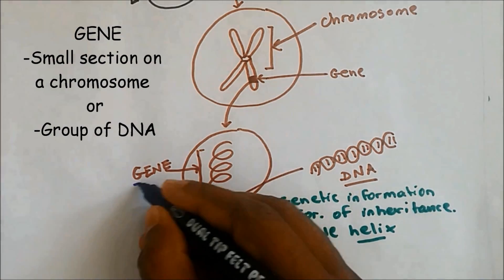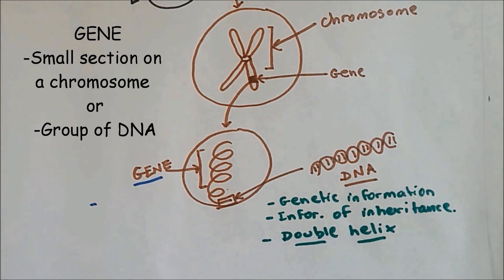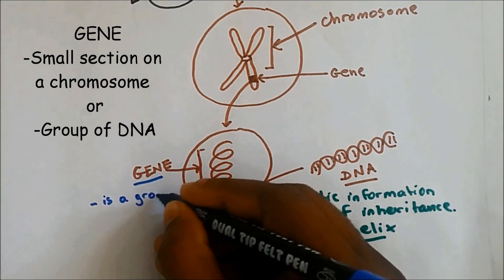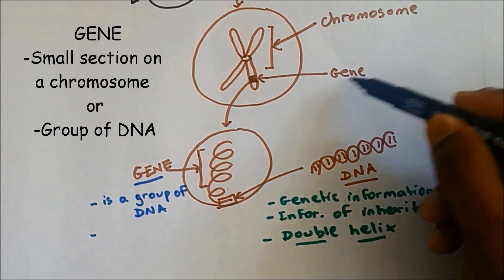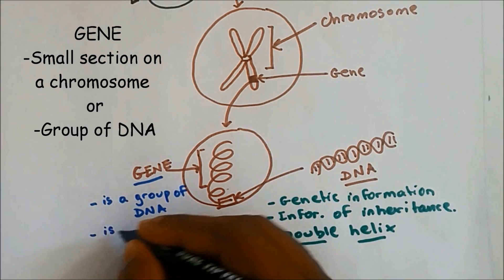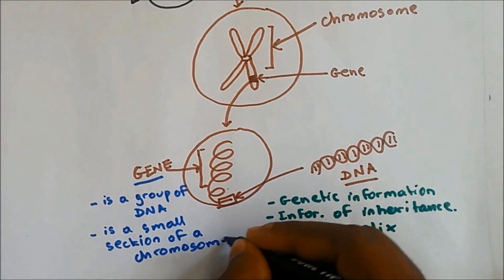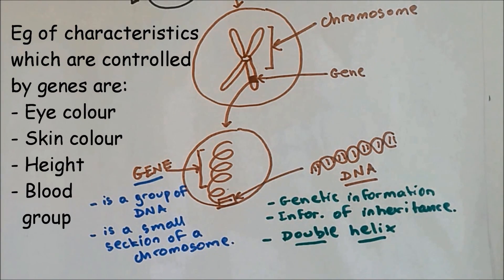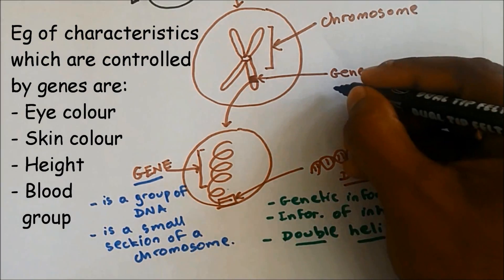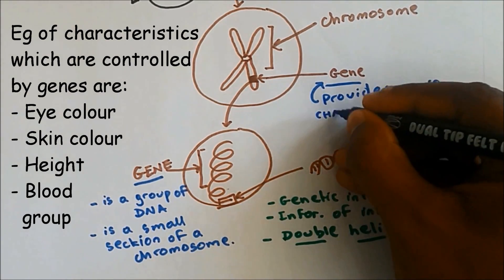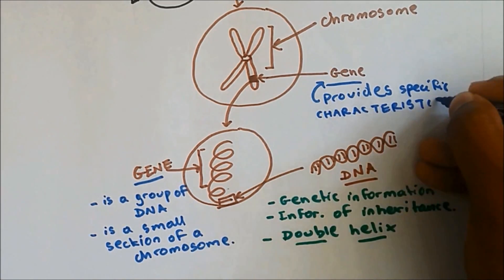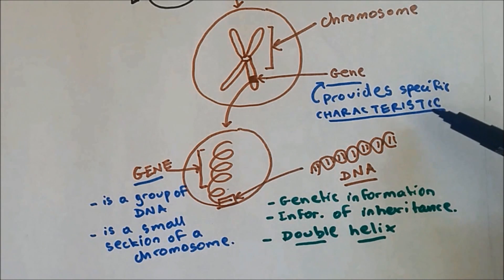Let's focus on genes. As mentioned before, a gene can be defined as a group of DNA, or in terms of chromosomes, a gene is a small section of a chromosome. It is the gene that provides specific characteristics — for example, our eye color, skin color, and height. Genes provide specific characteristics.